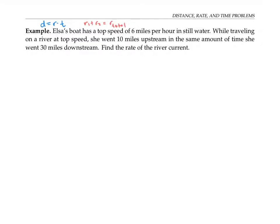Elsa's boat has a top speed of six miles per hour in still water. While traveling on a river at top speed, she went 10 miles upstream in the same amount of time she went 30 miles downstream. We're supposed to find the rate of the river current.